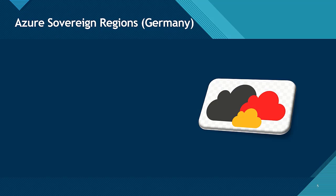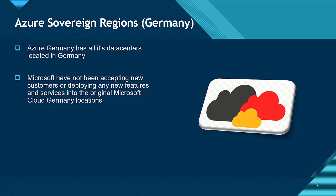We also used to have the Azure Sovereign Region Germany. This was designed to meet the cloud needs of the EU countries. Azure Germany has all its data centers located in Germany, and T-Systems International was responsible for the operation and management of all the data in Azure Germany. Microsoft has not been accepting new customers or deploying any new features or services into the original Microsoft Cloud Germany locations. Azure Germany is being deprecated in favor of the standard non-sovereign Azure regions in Germany.